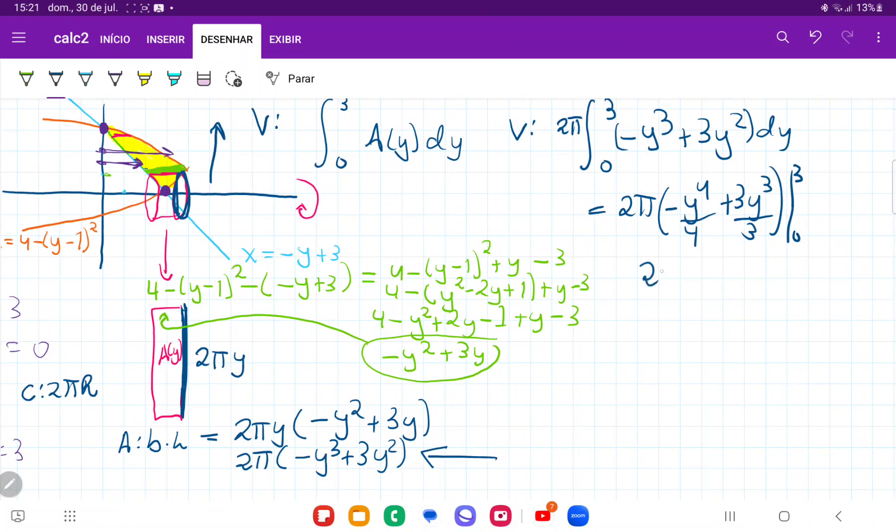So when we plug in our boundaries, we get 2π times minus 81 over 4 plus these 3s cancel out, so that's plus 27.